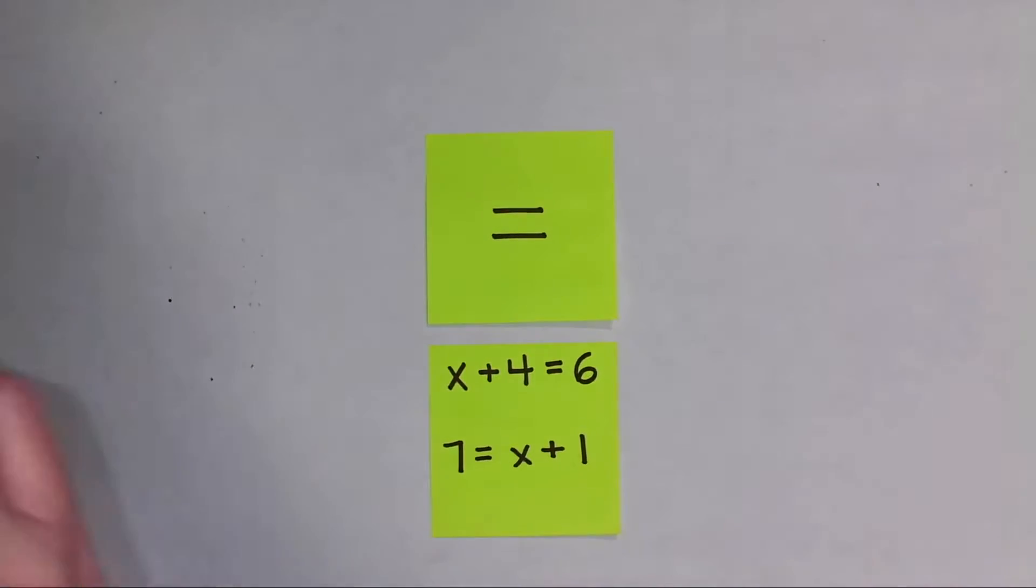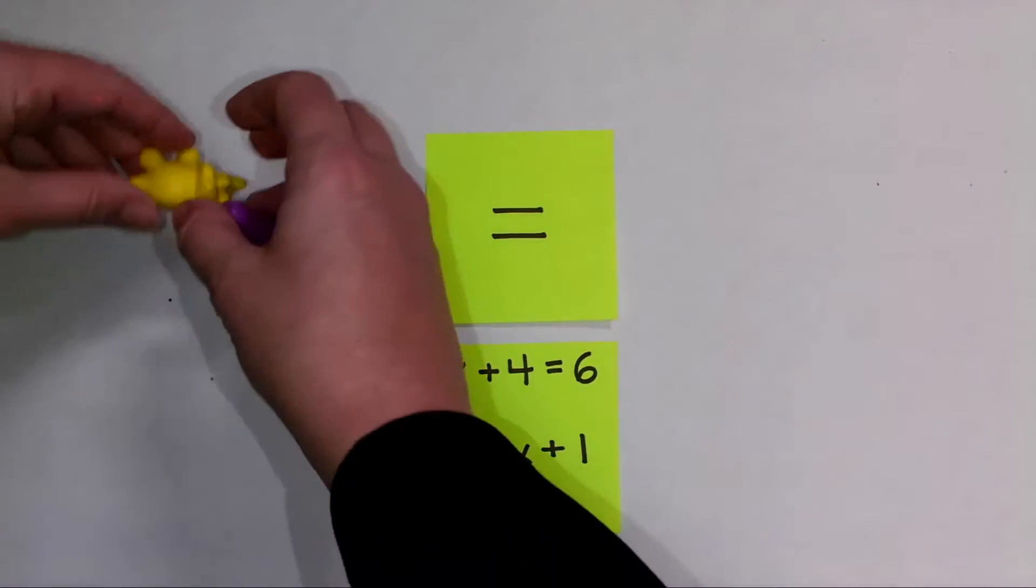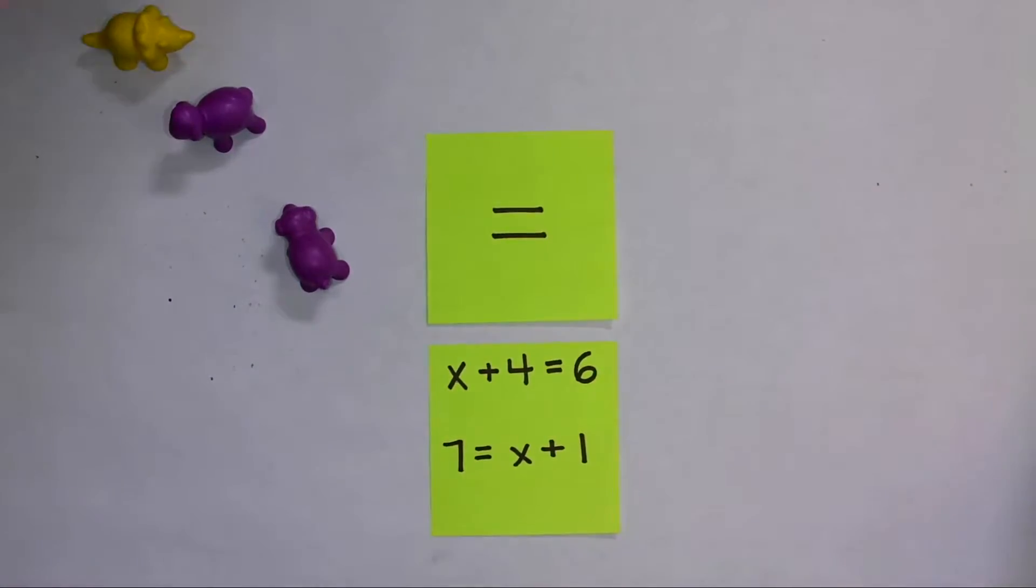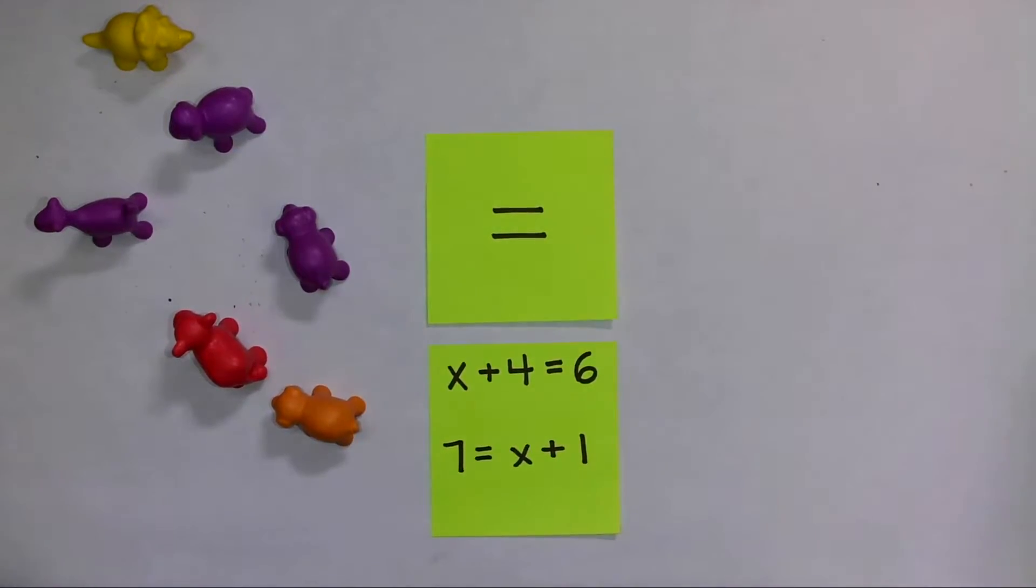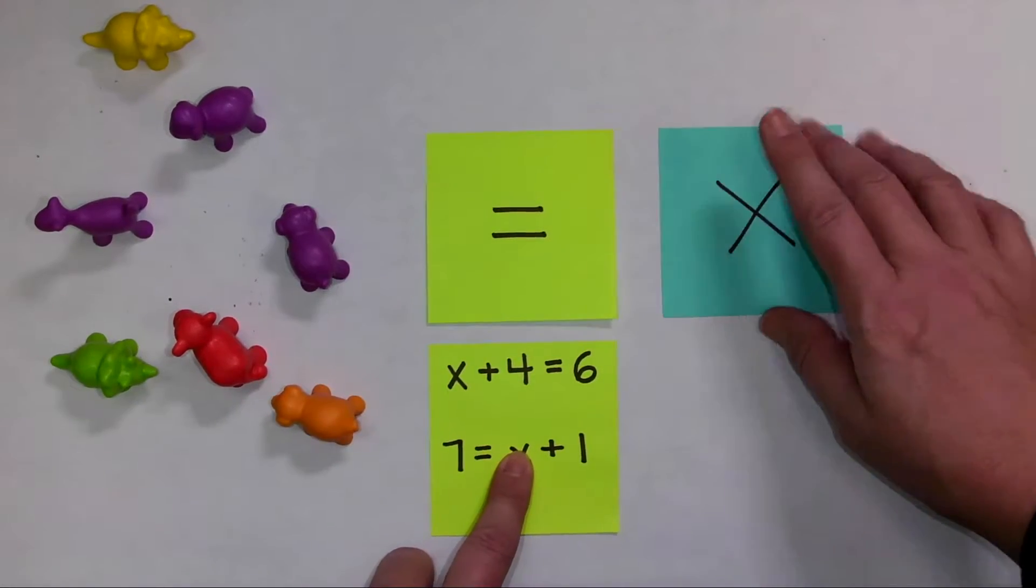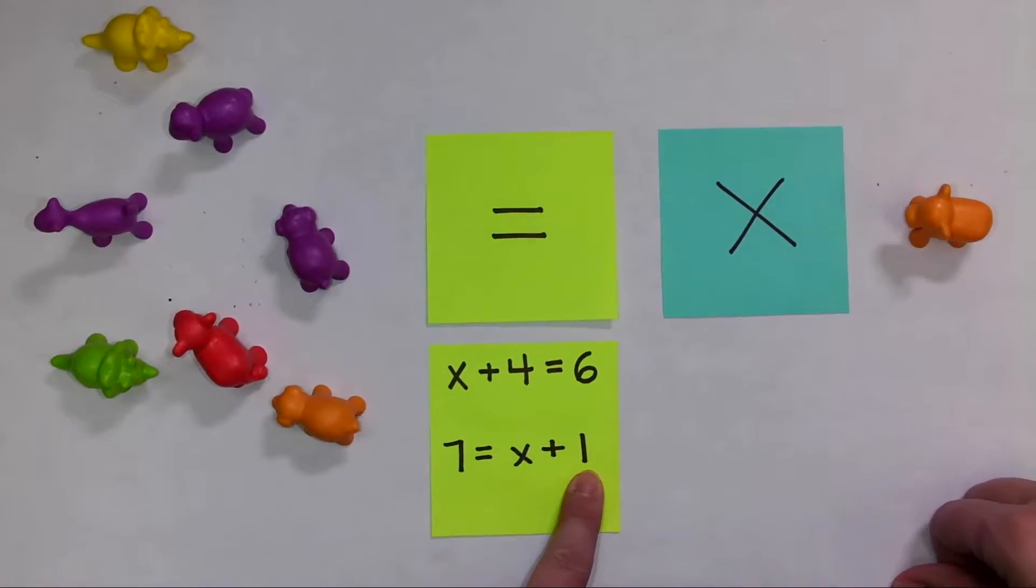Now let's solve this next problem: 7 = x + 1. This time I'm going to use these fun little creatures. I'm going to get seven of them out: five, six, and I'll bring in the dinosaur for seven. That equals x—I'm just going to use a simple post-it note with an x written on it—plus one.